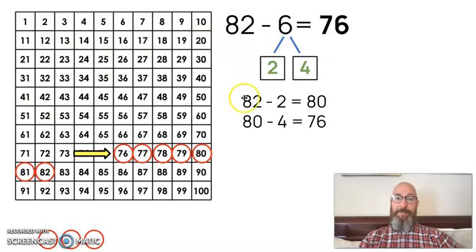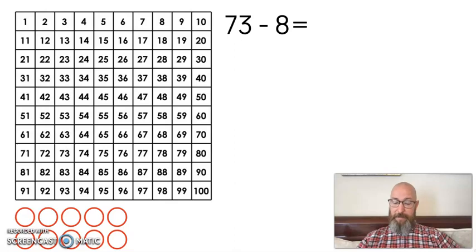We take the number, break it apart, and subtract it in smaller pieces because it's easier to work with smaller pieces. Let's try another one together: 73 minus 8.